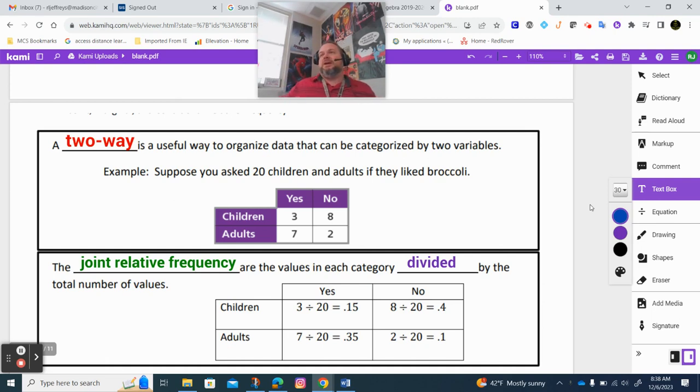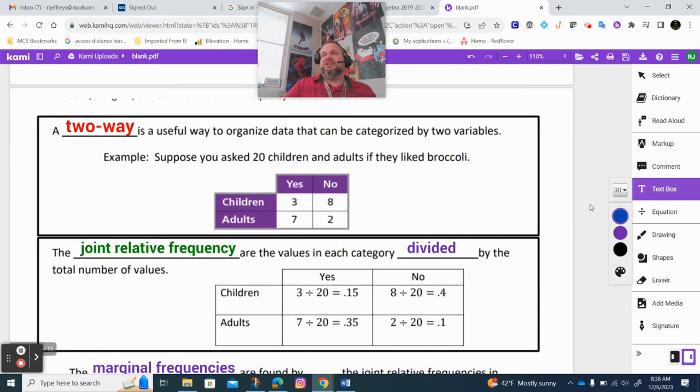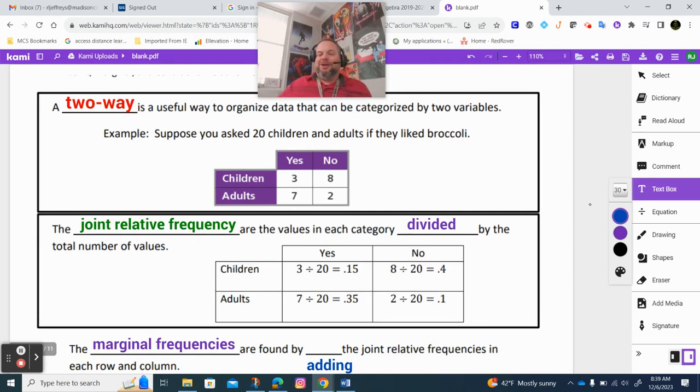Alright, so a two-way table. This is what's crazy. Seven years ago when I first had to teach this, I was like, what the heck is this? I hadn't seen it, even in my stats classes. It's actually not that difficult. As long as you listen to how to do it the first time, that's where it's going to be difficult for many people. So two-way table. We asked 20 adults and children if they liked broccoli.